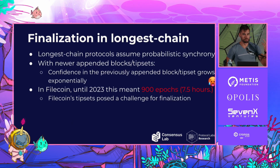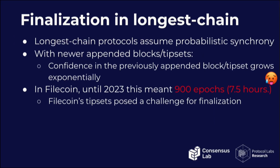Longest chain protocols assume probabilistic synchrony, so the confidence in a block not being reverted as a result of a fork grows over time with more blocks appended to the chain. In Filecoin until 2023, this meant 900 epochs. Not every longest chain protocol prescribes a particular finalization time, but in Filecoin it is prescribed because the power table is part of the system state and is assumed to be final — embedded in the implementation as seven and a half hours. Filecoin is not really a chain of blocks but a chain of tip sets, with epochs discretized to 30-second slots.